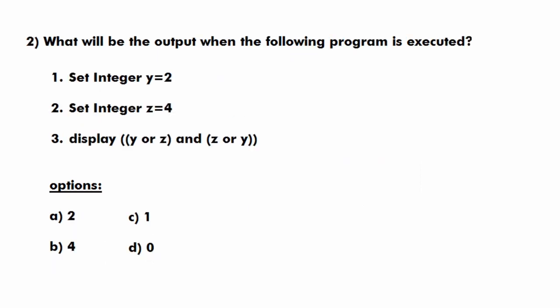Moving to the second question: what will be the output when the following program is executed? This is also a 3-line pseudocode. In the first line we have a variable y with value 2, and in the next line a variable z with value 4. Then we display the expression y OR z AND z OR y, where OR and AND are logical operators.